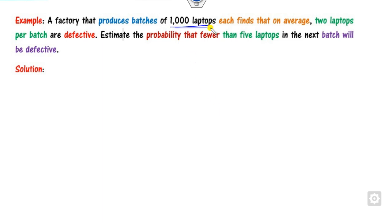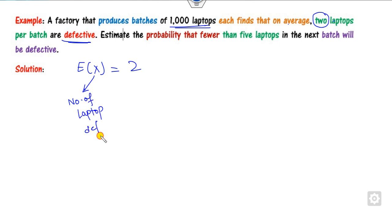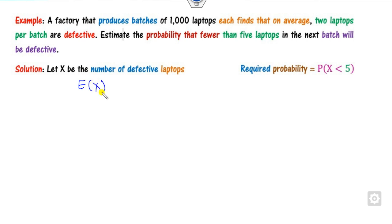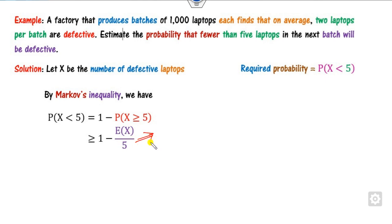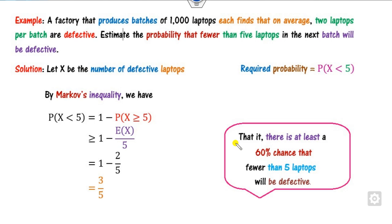A factory produces 1000 laptops. On average, 2 laptops per batch are defective, so E[X] = 2. Find the probability that fewer than 5 laptops are defective. Since Markov inequality applies for greater than, rewrite as 1 − P(X ≥ 5). Applying Markov inequality: P(X ≥ 5) ≤ E[X]/5 = 2/5. Therefore, P(X < 5) ≥ 1 − 2/5 = 3/5 = 60%.